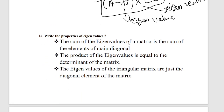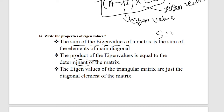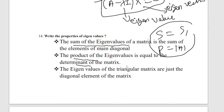Properties of eigenvalues: the sum of eigenvalues equals S1 (sum of main diagonal elements); the product of eigenvalues equals the determinant of A. The eigenvalues of triangular matrices are simply the diagonal elements of the matrix.